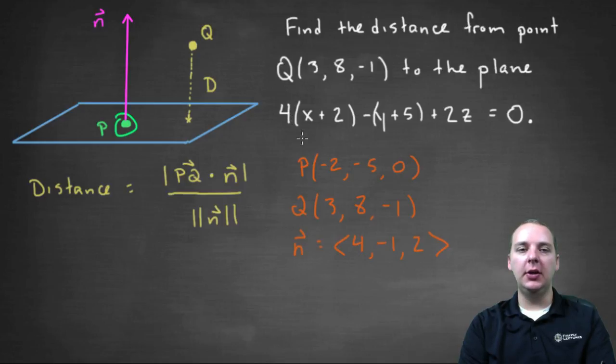So let me compute PQ, and then I'll go right to my formula. So a vector from point P to point Q, we'll do terminal minus initial. We'll take 3 minus (-2), that gives us 5. 8 minus (-5), that's 13. And -1 minus 0, is -1.